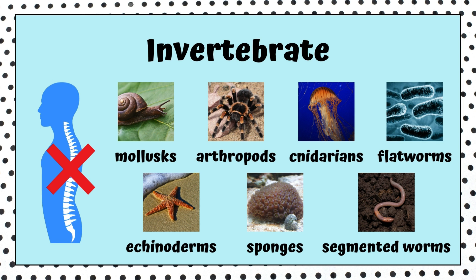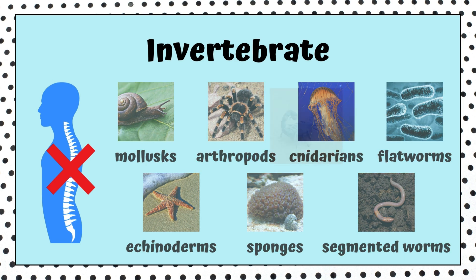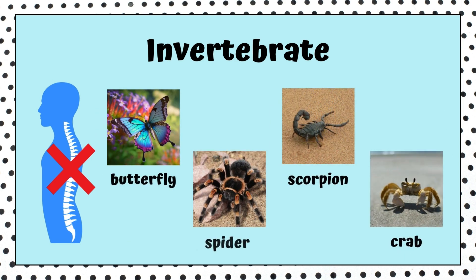Amazingly, invertebrates make up 97% of the world's animals. Some invertebrates you might know include a butterfly, spider, scorpion, or crab.